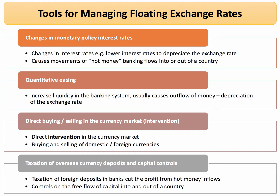There are tools to manage a floating exchange rate. The obvious one is interest rates — a change in relative interest rates will affect inflows and outflows of hot money. Quantitative easing also has an impact; if a central bank expands its QE programme and creates more base money, some will leave the economy and put downward pressure on the exchange rate, as seen in the US and UK. Central banks can also directly intervene in markets, and fiscal policy can be used too — for example, a special tax on foreign deposits makes that money less profitable and may reverse hot money flows.